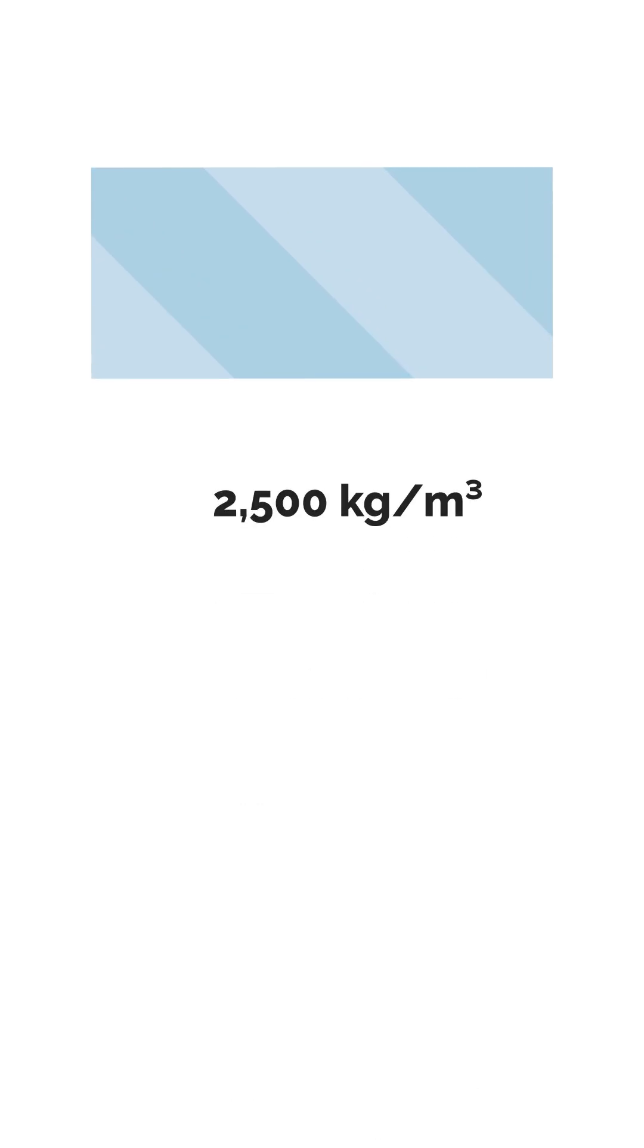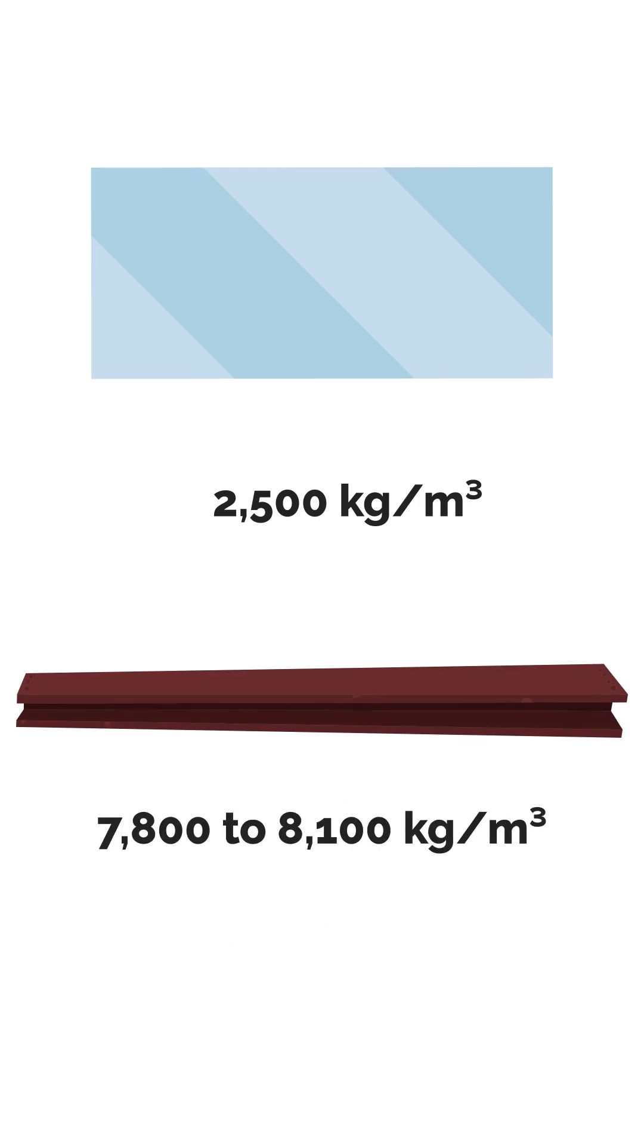Glass at around 2500 kilograms per cubic meter. And finally, steel. It's 7,800 to 8,100 kilograms per cubic meter. The heaviest and strongest of them all.